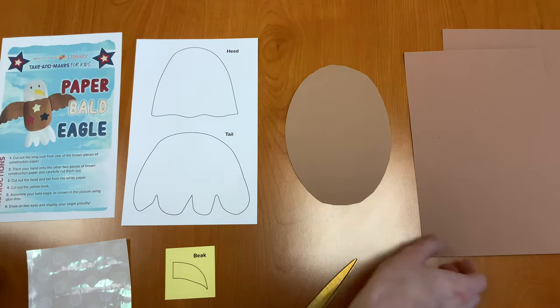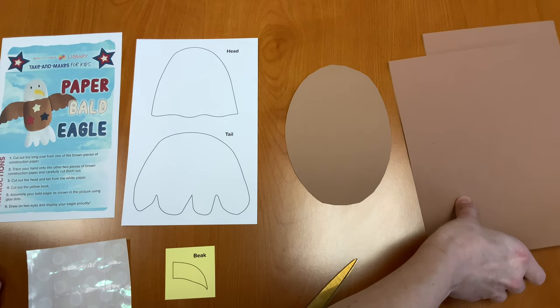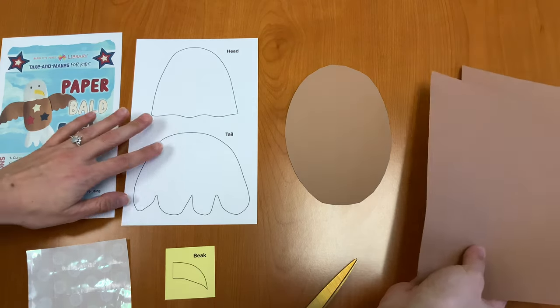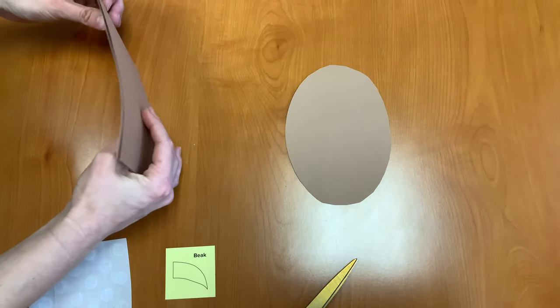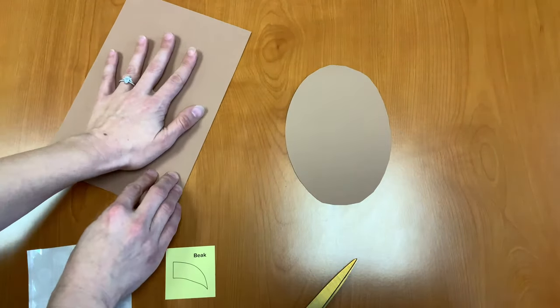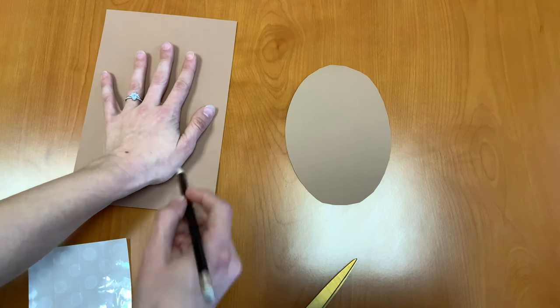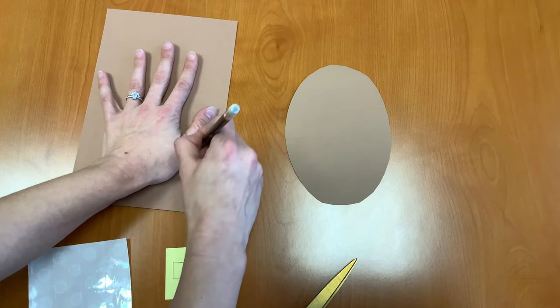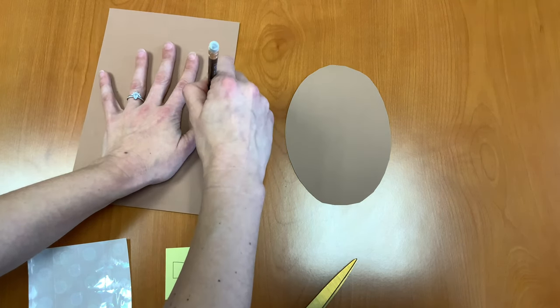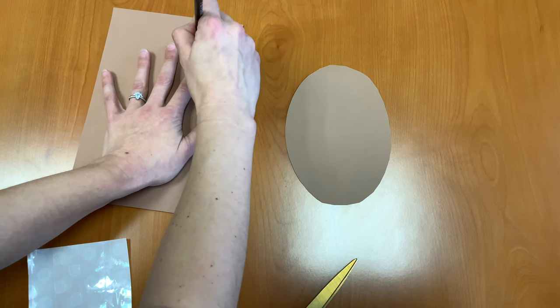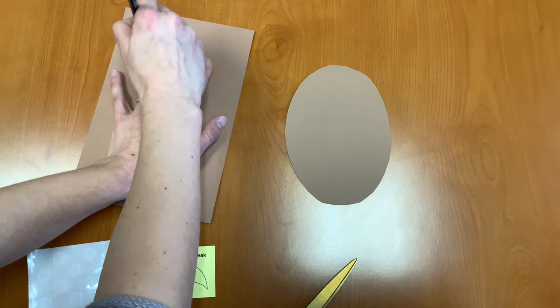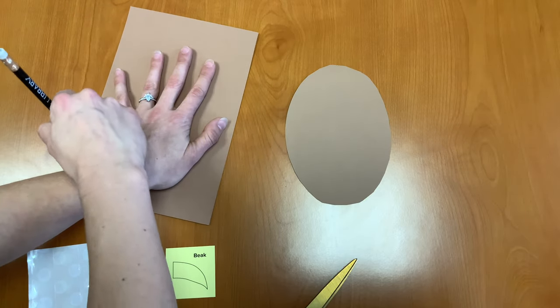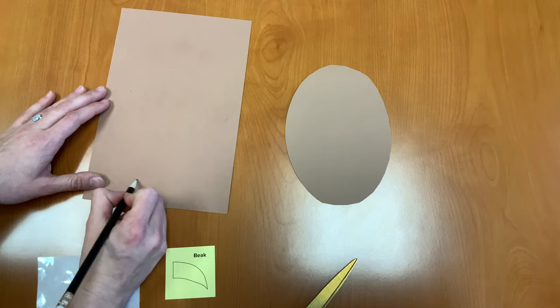Our next step is going to be to trace our hands on the other two pieces of brown construction paper, then carefully cut them out. So I'm going to put my hand on here, and I'm just going to trace, and you can have an adult help you trace or someone else. I'm just going to trace all the way around. And I'll lift my hand up and I'll close that off.